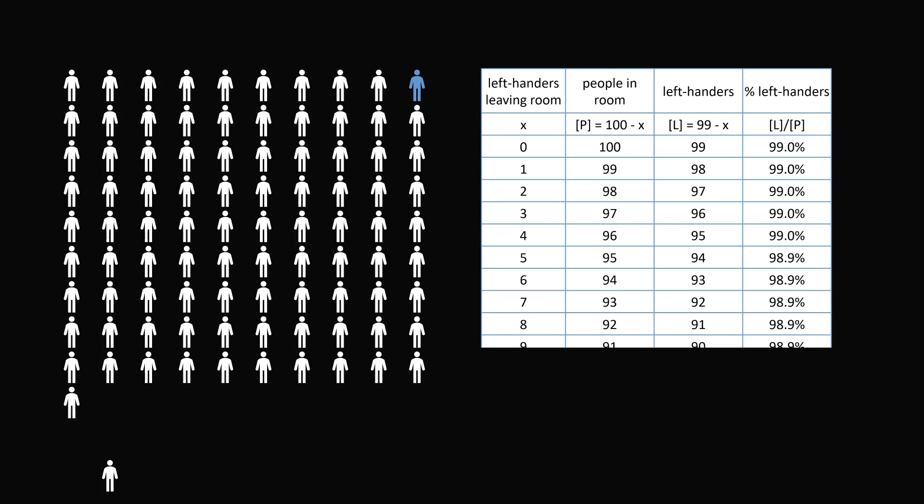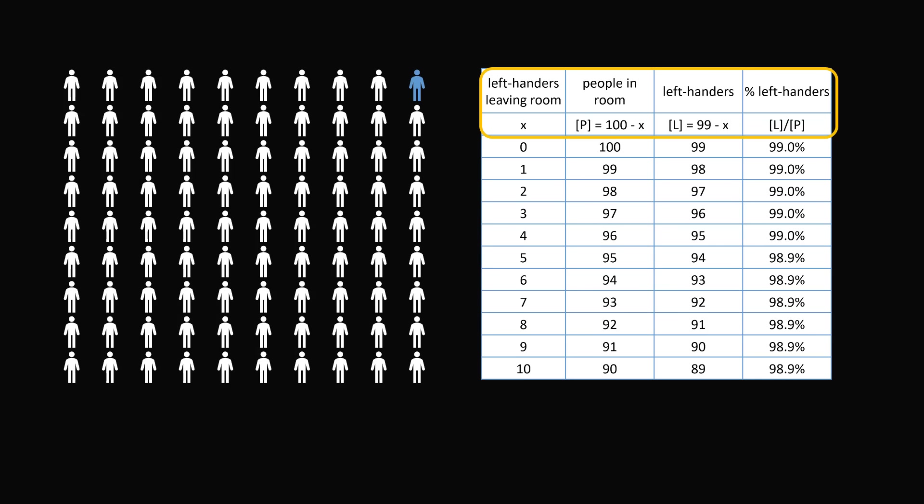So even as we have 10 left-handed people leaving the room, we're at 98.9% of the room is still left-handers. Rather than continue with this table person by person, let's take a look at the formulas.